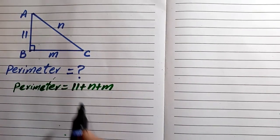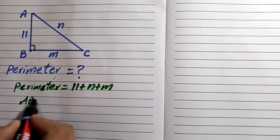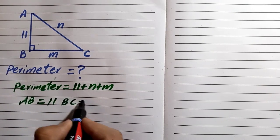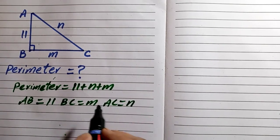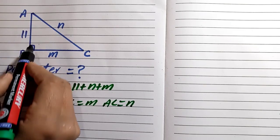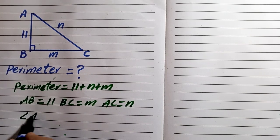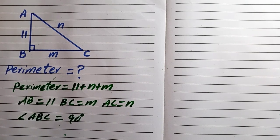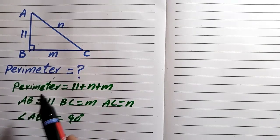Side AB is equal to 11, side BC is equal to m, and side AC is equal to n. In this triangle there is a right angle at point C, which is equal to 90 degrees, so we use the Pythagorean theorem to find the unknown values of m and n.